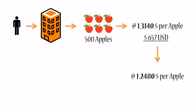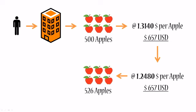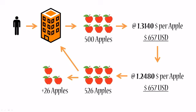Once the price for apples drops and hits about 1.2480 American dollars per apple, you still have those 657 dollars that you got in exchange for your apples a couple of days or weeks earlier. So what do you do with these 657 dollars? You go and buy back apples — with your 657 dollars you can buy 526 apples. As you remember, you still have to return 500 apples to your broker, and that's exactly what you do. You return 500 to the broker and you still have 26 apples of profit in your hands from this transaction.